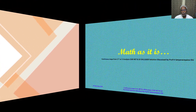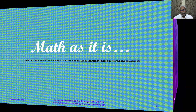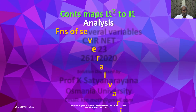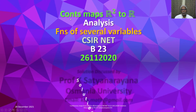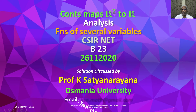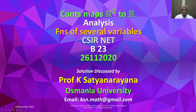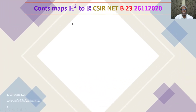We will now discuss the solution of a problem from the section analysis. The problem is on continuous maps from R square to R, and such questions are from the functions of several variables. This question has appeared in CSIR NET National Eligibility Test held on 26 November 2020. It is from section B and carries three marks.